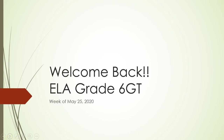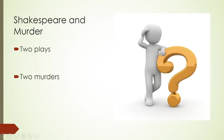Hello, and welcome back to ELA Grade 6 GT for the week of May 25th, 2020. Today, we will be reading excerpts from two of Shakespeare's plays in which a character commits murder. We will read closely to analyze exactly what is happening in the characters' heads when they decide to commit murder. We will analyze the impact of the word choices on the meaning and tone. So we'll look at two plays and two murders.